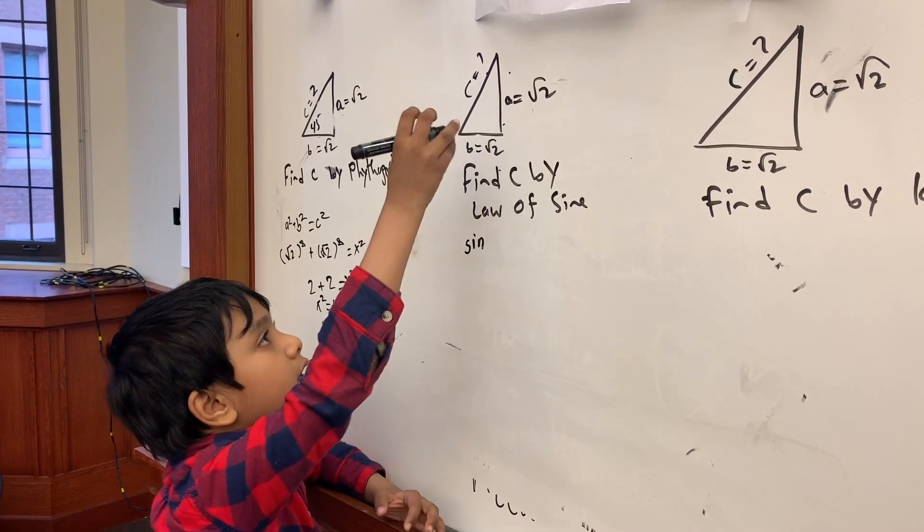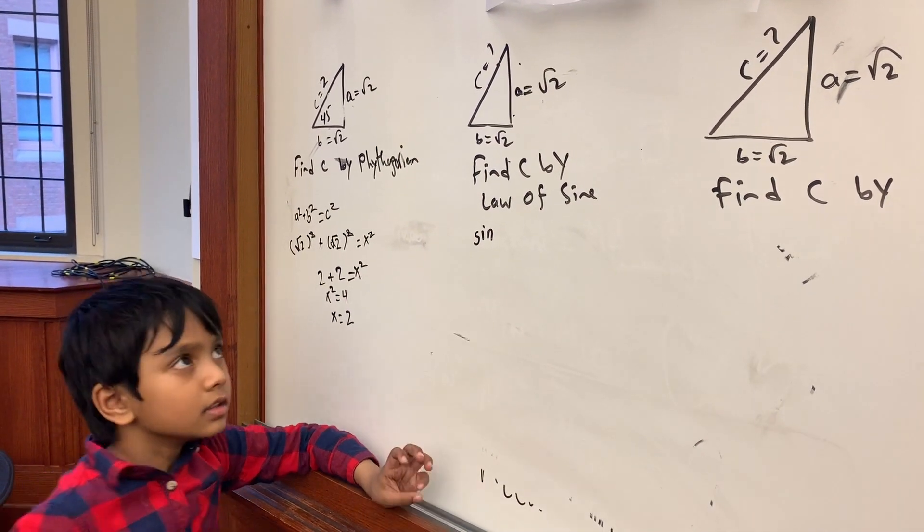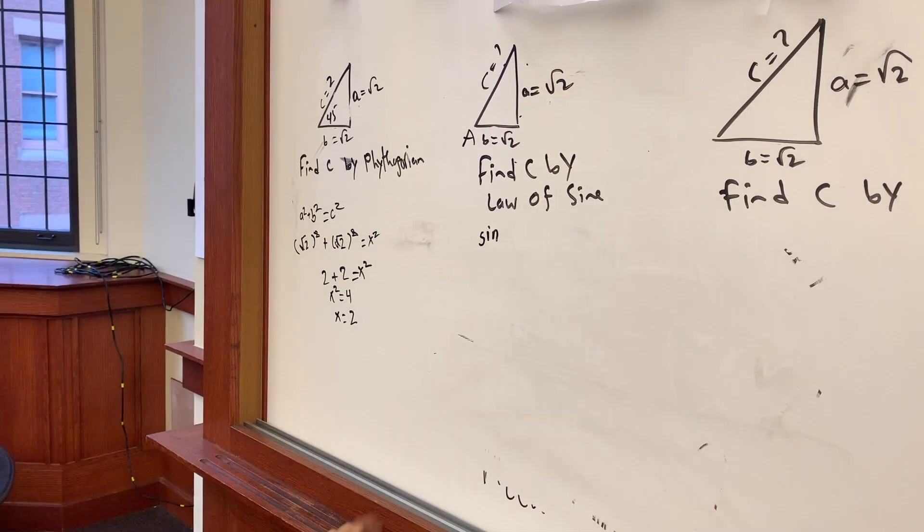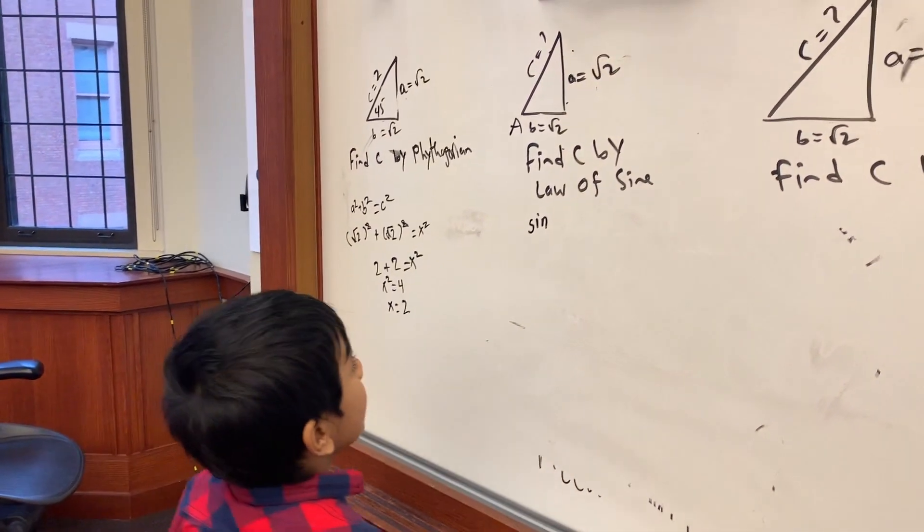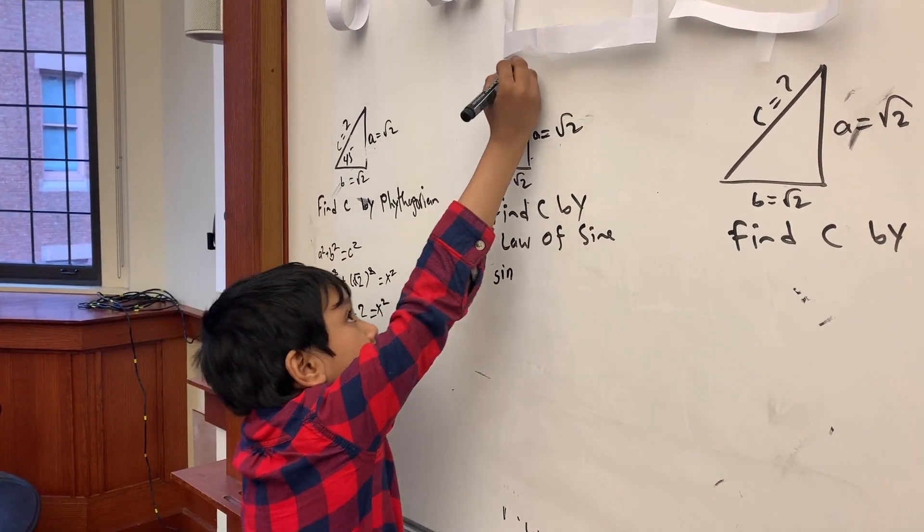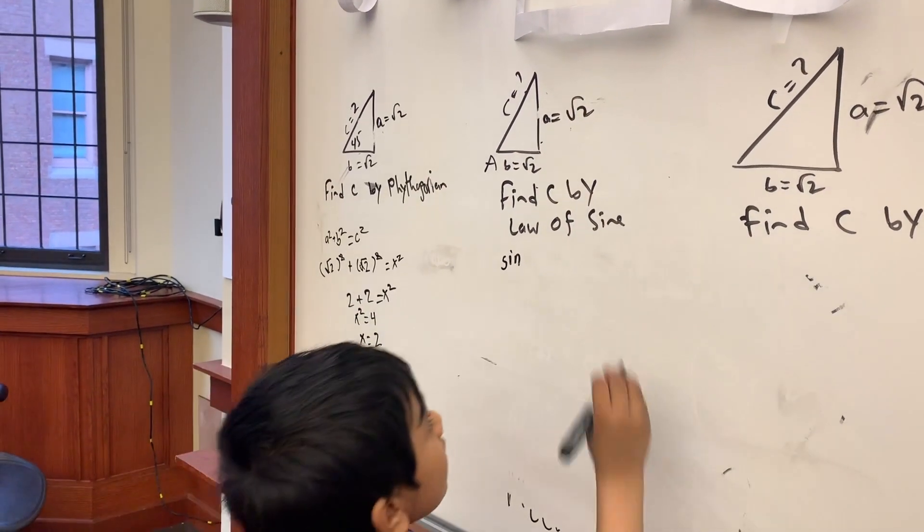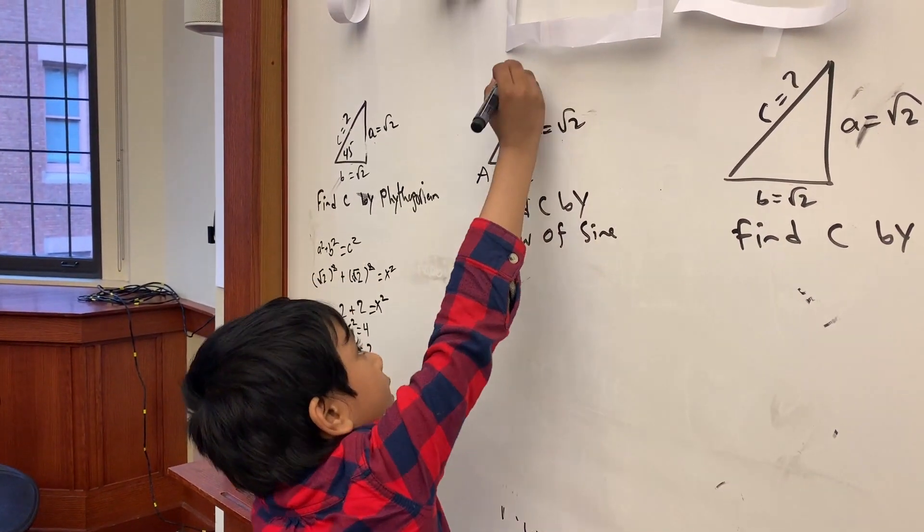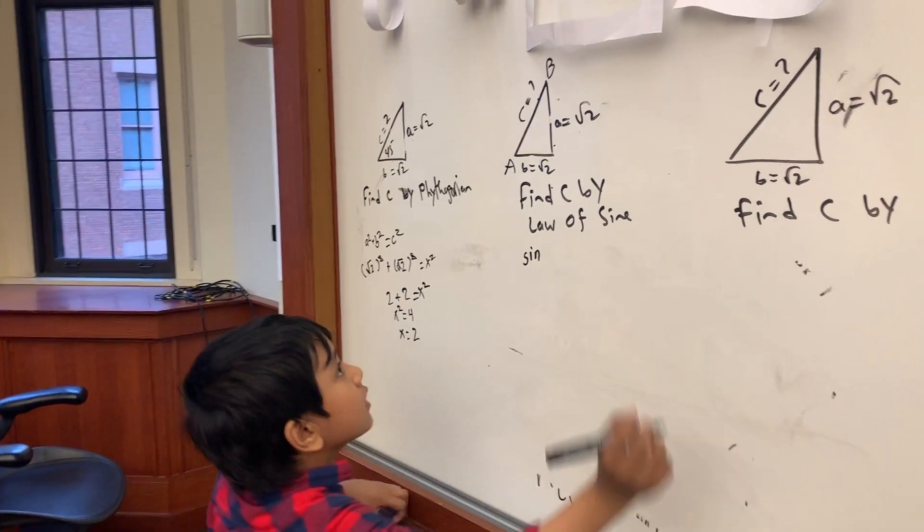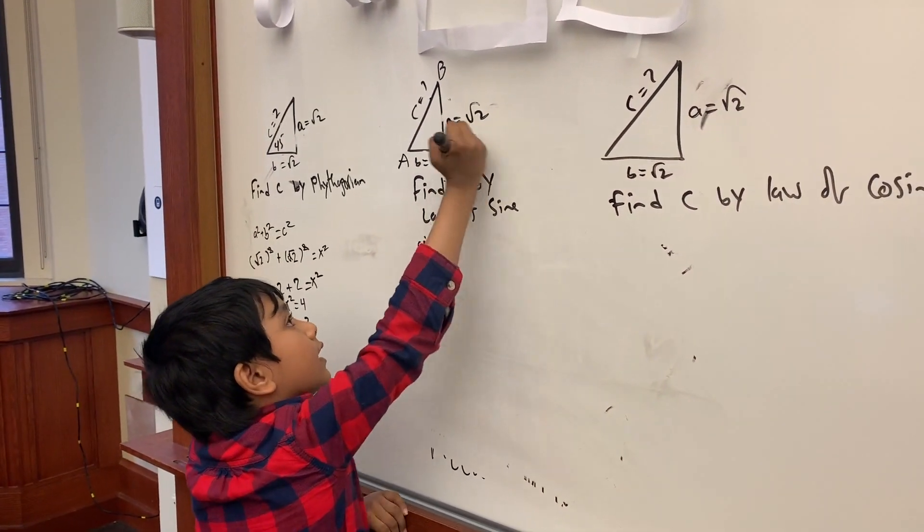So we are going to label this one A, since sine A lowercase a is opposite to this one. B, this one is... I think I need to stand up on my tipping. This one is B and the one here is C.